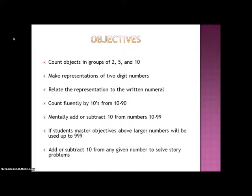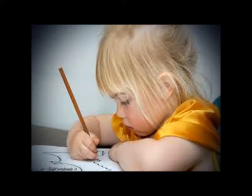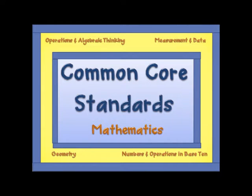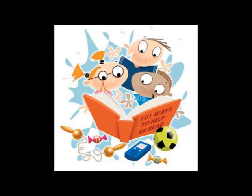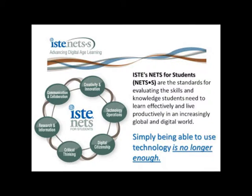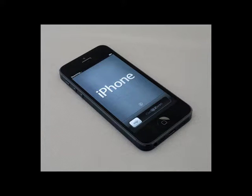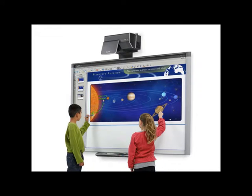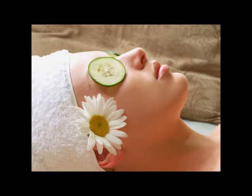Eventually students will progress to larger numbers, counting by 10's from any given number to 999. They'll also be able to add or subtract 10 from any given number to solve story problems. You will be witnessing some of the ways students can get excited and motivated to learn curriculum by applying multiple intelligences into teaching strategies. This unit will satisfy the Common Core State Standards for math and language arts curriculum, and also addresses the National Education Technology Standards for students, as they will use technology in my lesson plans. Kids use technology to analyze, learn, and explore math concepts.